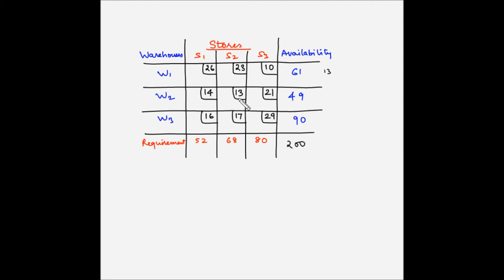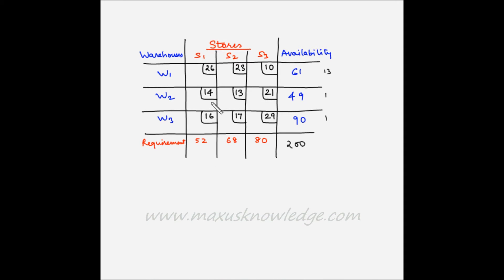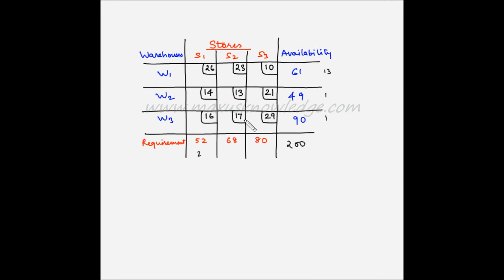For the second row, the lowest is 13 and the next lowest is 14, so the penalty cost is 1. For the third row, the lowest is 16 and the next lowest is 17, so the penalty cost is 1. For the first column, the lowest is 14 and the next lowest is 16, so the penalty is 2. For the second column, the lowest is 13 and the next lowest is 17, so the penalty is 4. For the third column, the lowest is 10 and the next lowest is 21, so 21 minus 10 is 11.